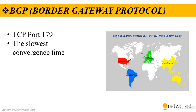Routing protocols are basically divided into IGP and EGP. As it can be understood from the name, IGPs are the protocols used in the internal network, and EGP is a generic name for the protocols used between networks — in other words, between different autonomous systems.